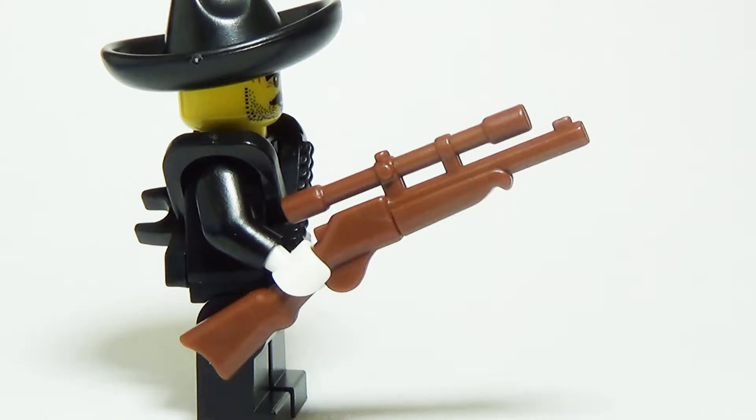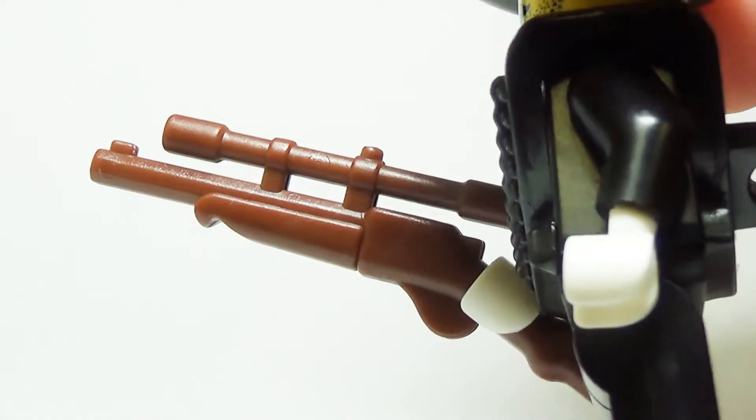Capable of taking down a buffalo hundreds of yards away, the buffalo rifle is one of the most feared custom guns in the west. In the hands of a sheriff minifig, it can be used to defend the town, but everyone better watch out if some outlaws get their hands on one of these.